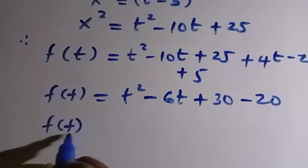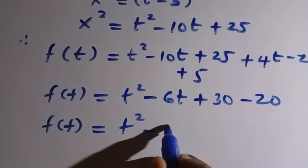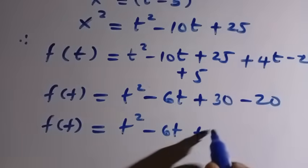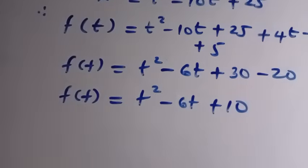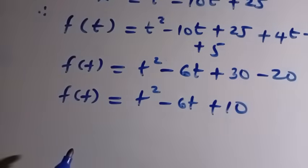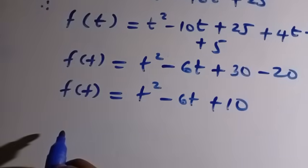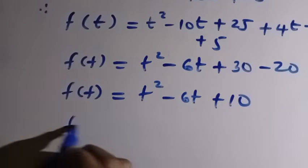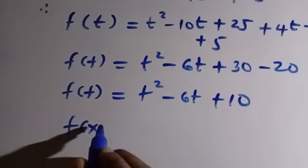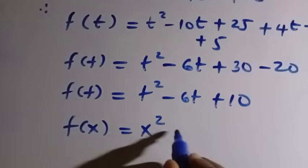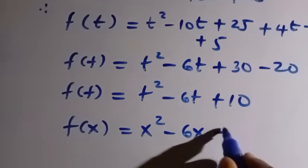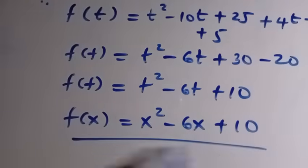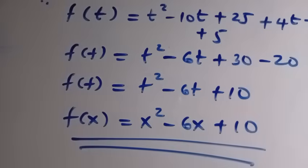We need to find f of x, not f of t. So we replace t with x, giving f of x equals x squared minus 6x plus 10. We get the same answer when we apply the substitution method, and similarly when we apply the form manipulation method to solve this functional equation — we get the same answer. This is how it works.